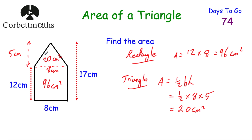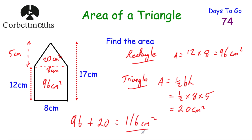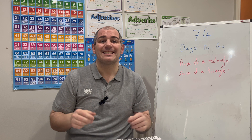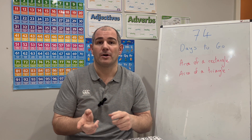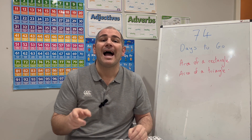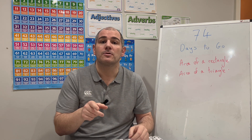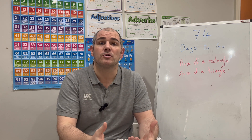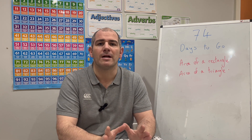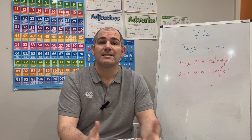We now know the area of the rectangle and the area of the triangle. To find the area of the whole shape, we add them together: 96 plus 20 equals 116 centimetres squared. And that's the area of that shape.